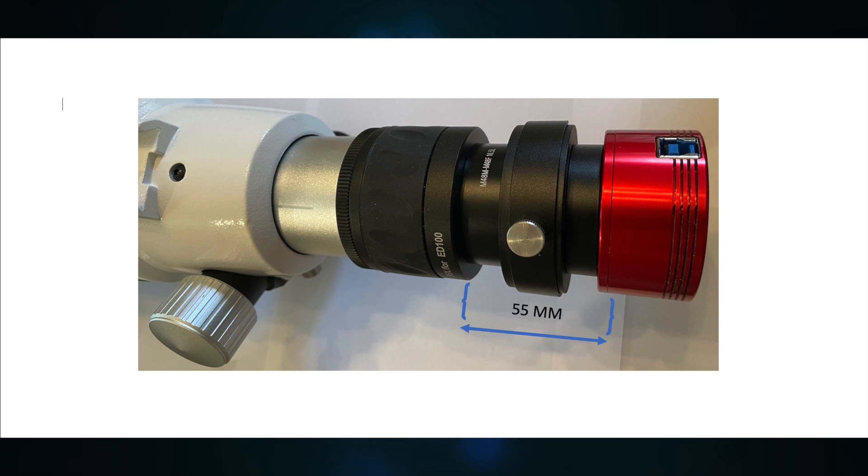So that was throwing off my back focus measurement of the tubing I was using. And at that time, I was also not using a filter drawer. I was just using tubing, and I bought a tubing extender kit and couldn't get the exact measurement—it was very close to 55 millimeters.